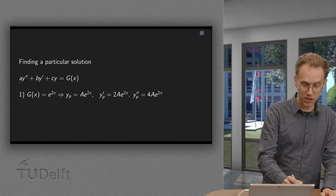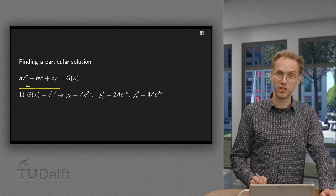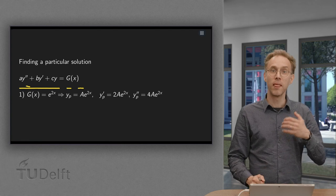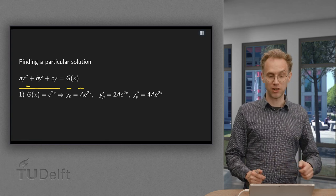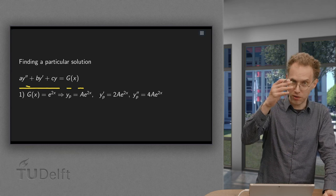So we have a second-order linear ODE: ay'' + by' + cy = G(x). So on the right-hand side depending on x. Now, how do you find a particular solution? This depends on your G(x). We'll do a few examples.